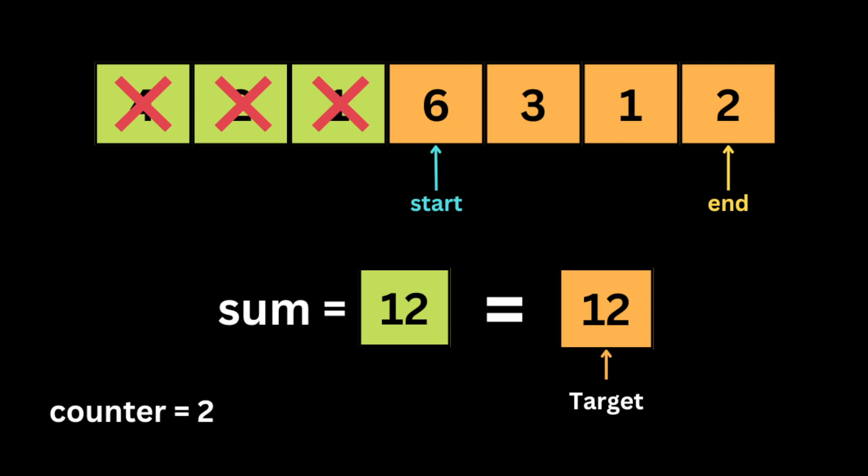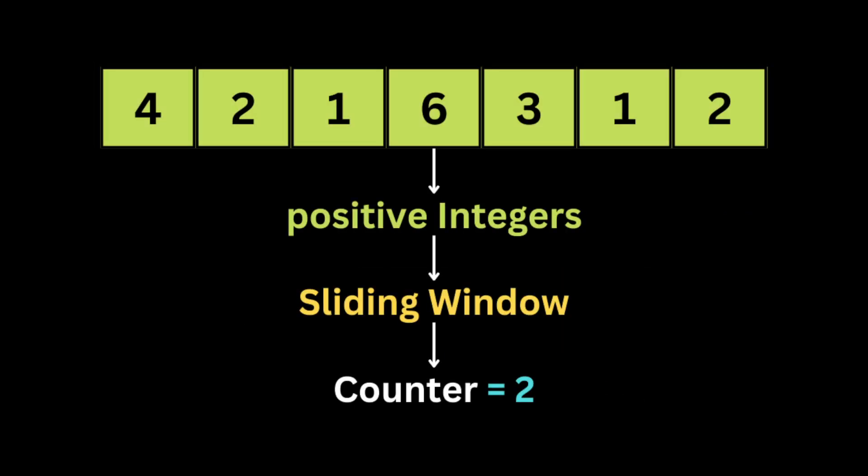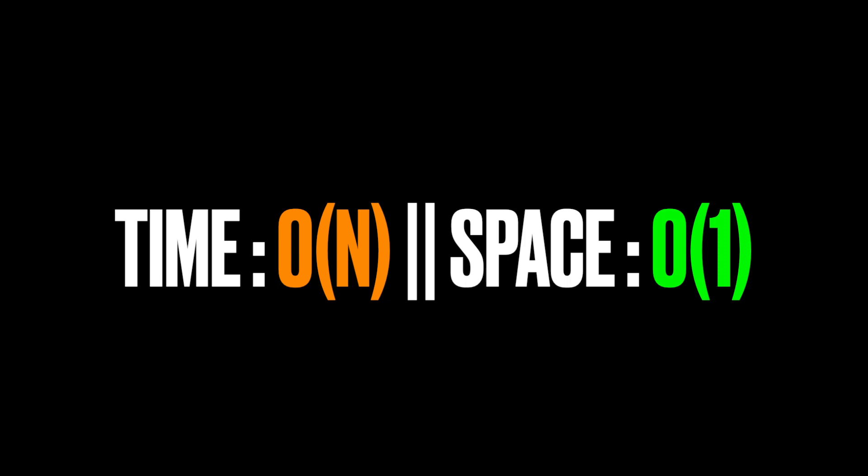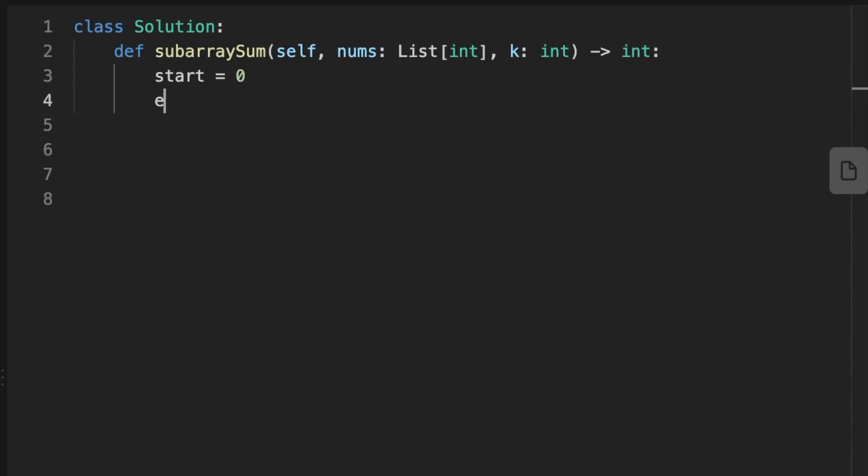We increase the counter by one and stop the loop, because further moves would give a result less than the target — we already processed this portion. Remember that the sliding window technique only works with arrays of only positive integers. The time complexity is O(n) since we loop through the array once, and space complexity is O(1) since we only use variables.